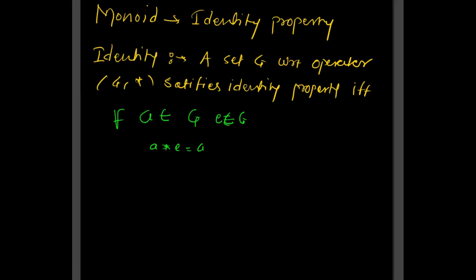In the last lecture we studied the associative property and the closure property. In this lecture we will understand monoid. Monoid satisfies the identity property. First we will understand the identity property. A set G with respect to operator star — that is (G, star) — satisfies the identity property if the elements 'a' belong to G.